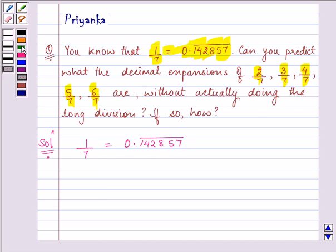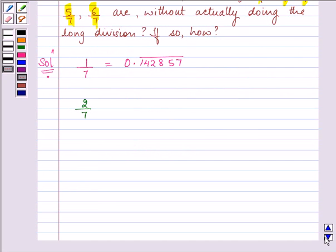Now, we are required to find the value of 2/7. What is the difference between 1/7 and 2/7? We have just multiplied 1/7 by 2, isn't it? So here also we can multiply the answer by 2.